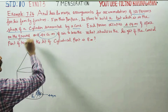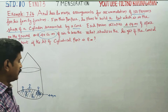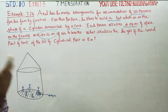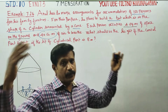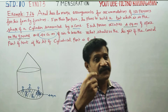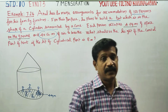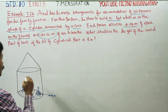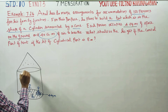Each person requires 40 cubic meters of air to breathe. That is why the tent must have a sufficient volume of air.